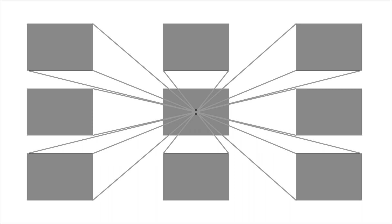Here we have nine rectangles and we want to convert them into nine cubes. First of all, you have to draw a point in the middle — we call this point the vanishing point. Then you have to draw some lines from the corners to the vanishing point. Next, you need to decide how deep they're going to be, for example this much.